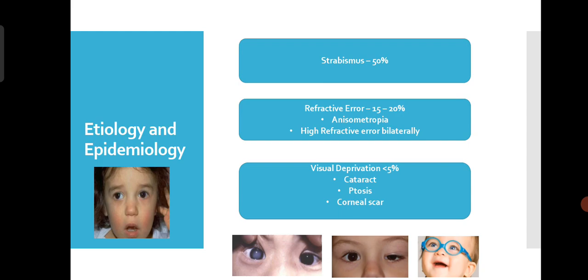Strabismus causes 50% of Amblyopia cases. Refractive error causes 15 to 20% of Amblyopia. If the child has a high refractive error in both eyes and it is uncorrected — the parent does not take the child to the doctor — the child's eye is seeing blurred images and the brain becomes accustomed to taking only those blurred images. So even after correction at age 10, we cannot get 100% vision. This is called bilateral Amblyopia due to high refractive error in both eyes.